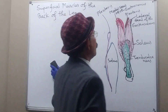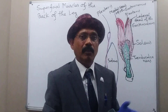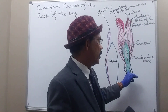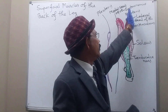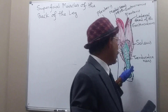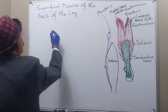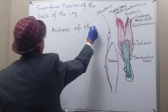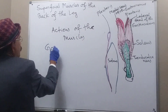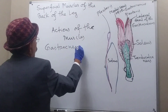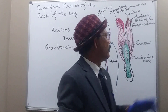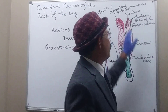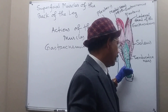The action of the plantaris: it is a very small muscle with no very significant action. It may work along with the gastrocnemius, especially the lateral head, and along with the tendo calcaneus. It may flex the knee joint and also cause plantar flexion of the ankle joint.